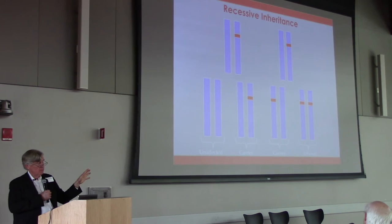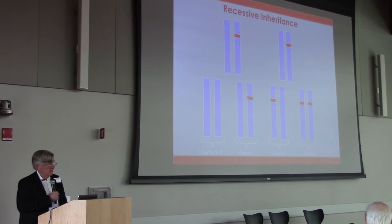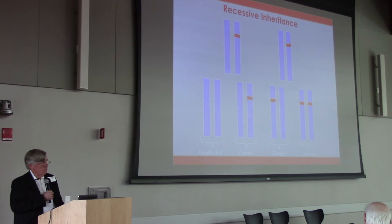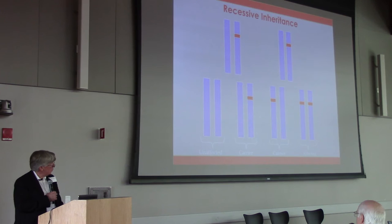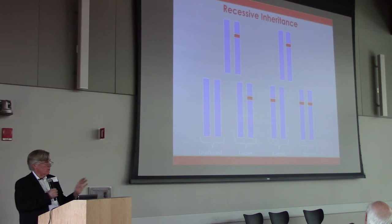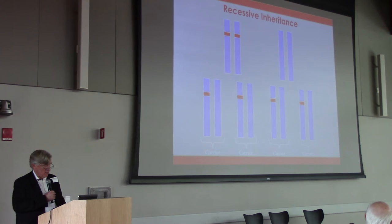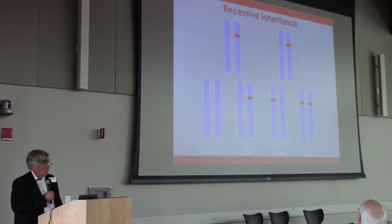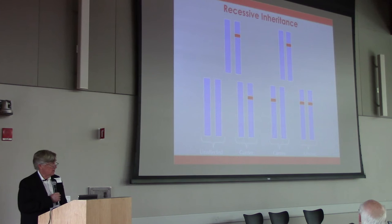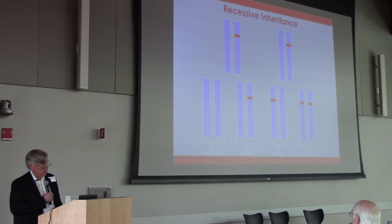The opposite situation is recessive inheritance, where both parents are carriers — they each have one normal chromosome and one with a genetic change, but they're fine with no symptoms. When they have kids, they'll pass on one or the other chromosome. One out of four children may get the genetic change from both mom and dad, and that individual will have a neuropathy.